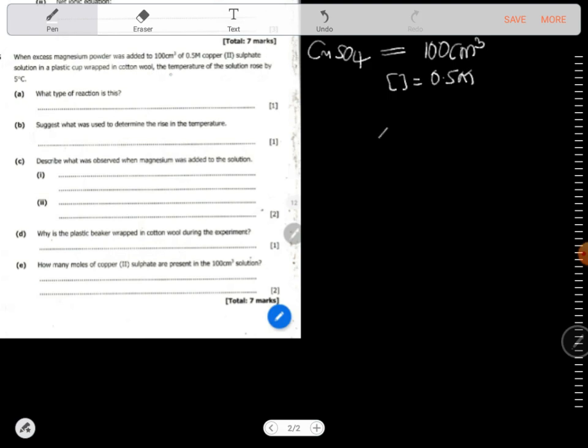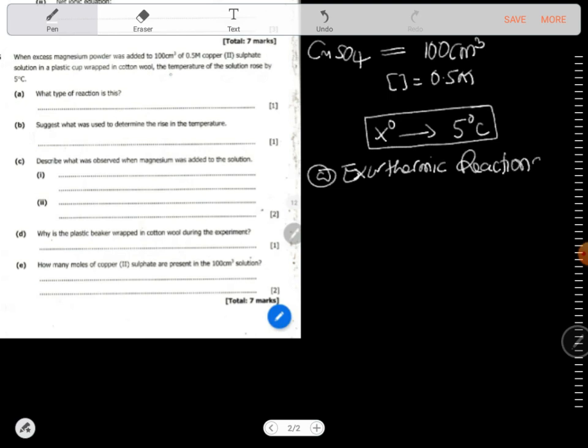In a plastic cup wrapped in cotton, the temperature of the solution increased. So we had some initial temperature which we don't know, but it had to increase to 5 degrees Celsius. Now, since it increased to 5 degrees Celsius, what type of reaction is this? So this reaction that shows an increase in temperature in the surroundings, that's what we'll call exothermic reactions. Exothermic reactions.